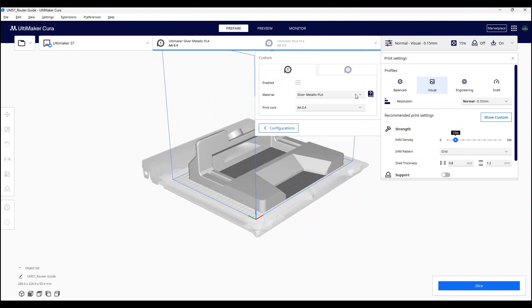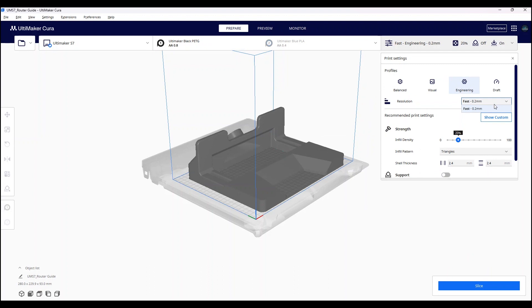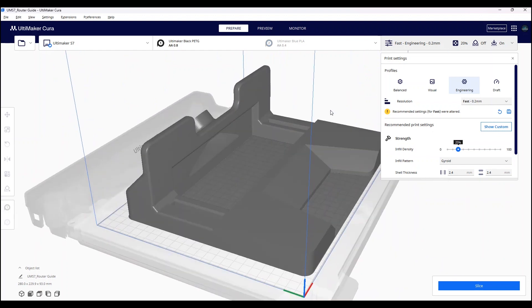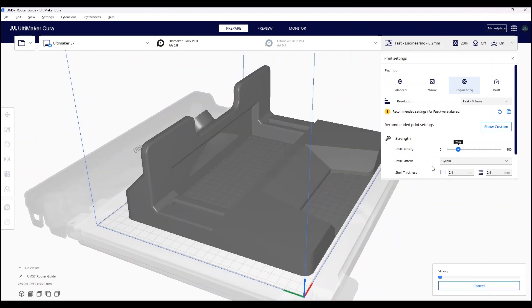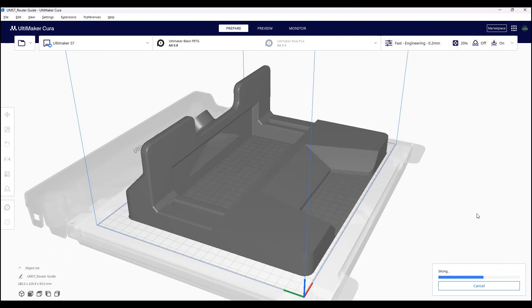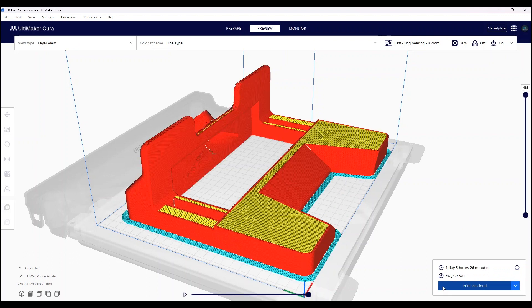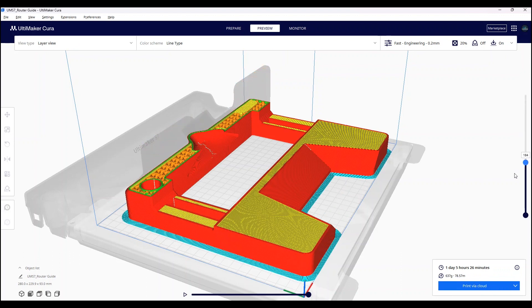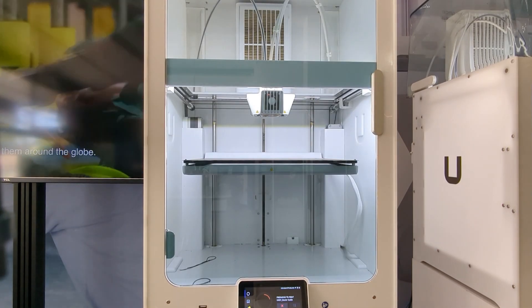Cura is a slicing software from Ultimaker that allows you to select the material and the print profile to print on your 3D printer. In this design, I selected PETG because I figured it would be more hard-wearing. Because of the size of my jig, I required a large build plate and decided on using the Ultimaker S7 from Ultimaker. The jig fit perfectly within the Ultimaker S7's build volume.